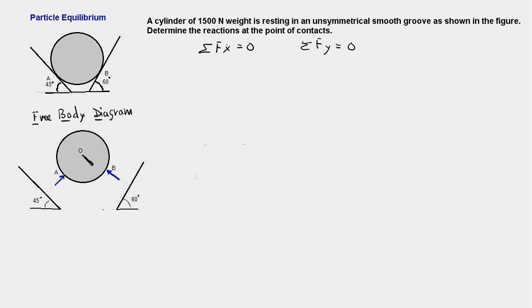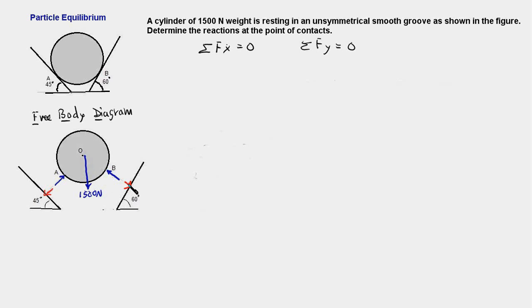These are the two reaction forces and the weight acting at the center of the cylinder, which is given as 1500 Newtons. These two are the forces acting on the cylinder due to the surfaces, and the cylinder also exerts force on the surfaces. So this is the force exerted by the cylinder onto the surface of the groove, and this is the force which the surface exerts on the cylinder — we call this action and this reaction. The action-reaction forces exist in pairs and obey Newton's third law, and therefore they are equal in magnitude but oppositely directed. Let's call this reaction force as Rb and this reaction force as Ra.